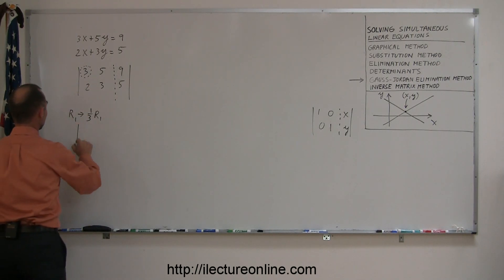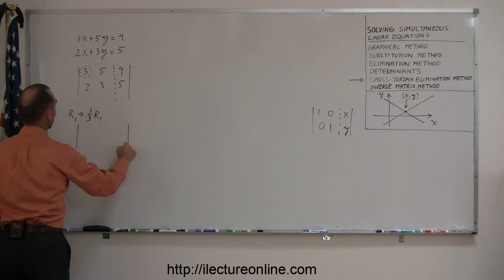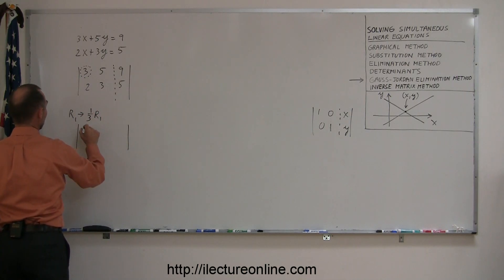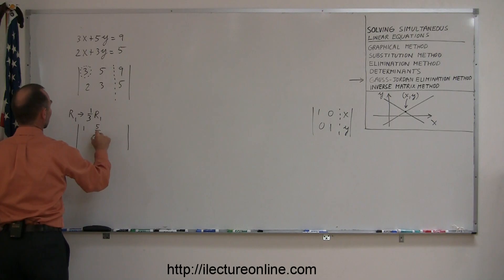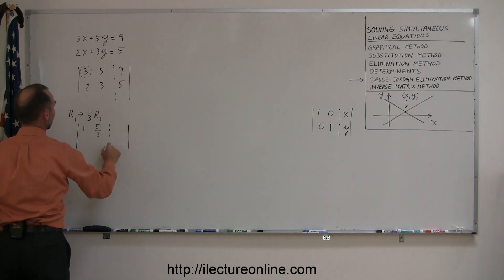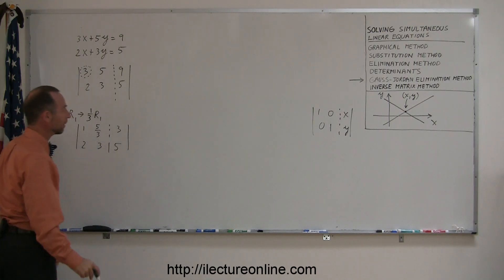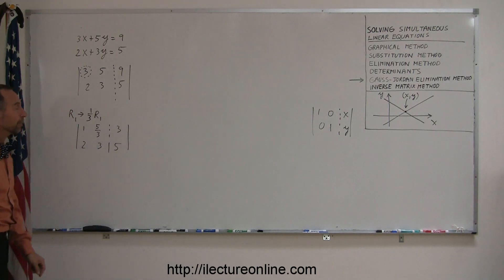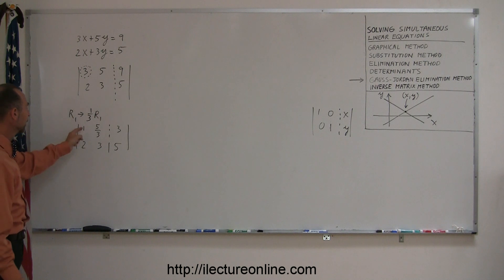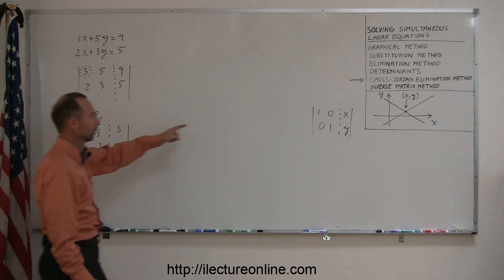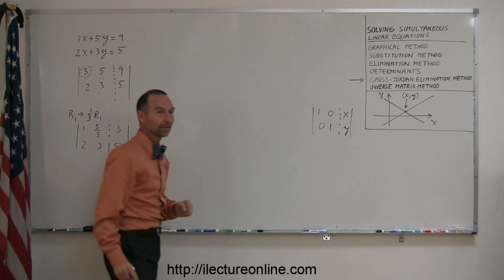When you do that you get the following: 3 divided by 3 is 1, 5 divided by 3 is 5 over 3, 9 divided by 3 is 3, and the second row goes unchanged. We have now taken our first number and turned it into a 1.